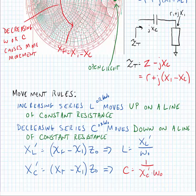To find the value of the capacitance or inductance, we find the reactance from the edge of the chart, subtract the initial reactance, unnormalize by multiplying by the characteristic impedance, and then find inductance or capacitance using the standard formula. Inductance equals reactance over frequency; capacitance equals 1 over reactance times frequency.